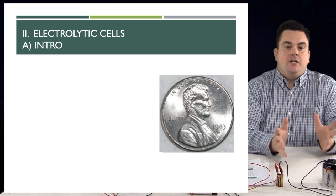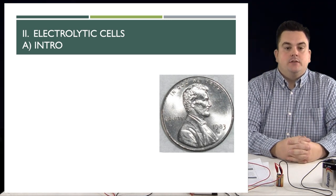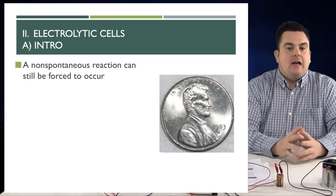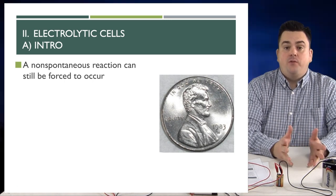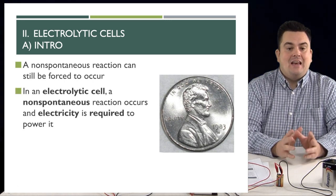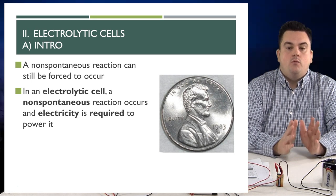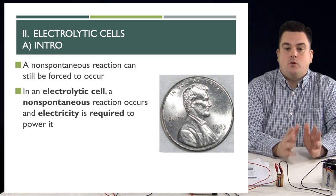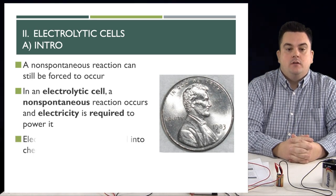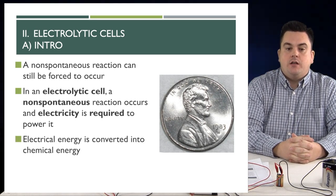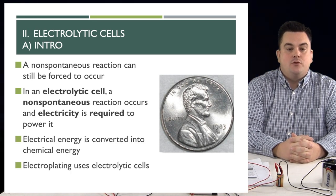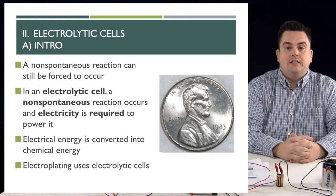Okay, we're finally ready to introduce electrolytic cells. A non-spontaneous reaction can still be forced to occur. In an electrolytic cell, a non-spontaneous reaction occurs and electricity is required to power it. Electrical energy is converted into chemical energy. Electroplating uses electrolytic cells. Notice in the image we have a silver-looking penny. That's because this is electroplated with zinc.